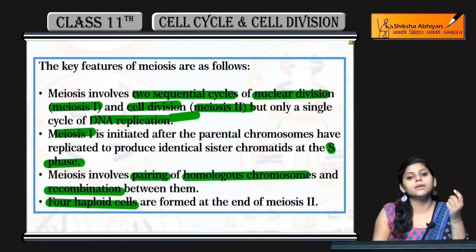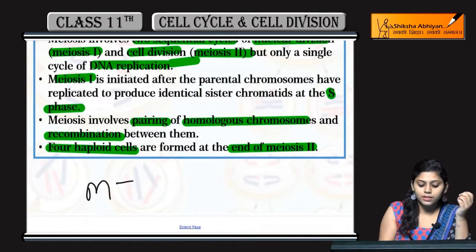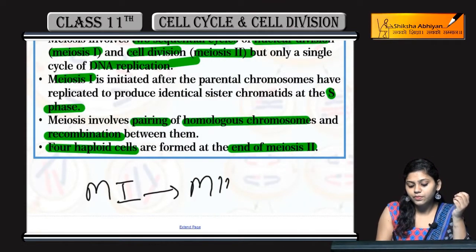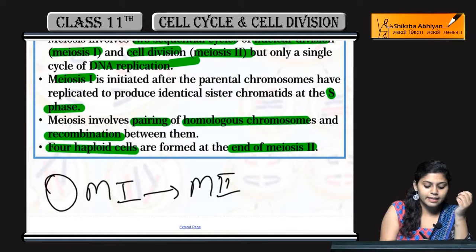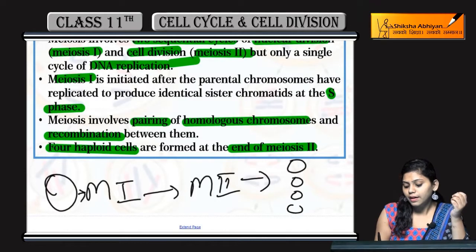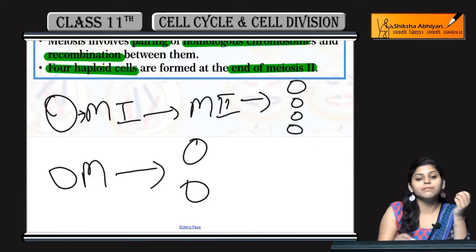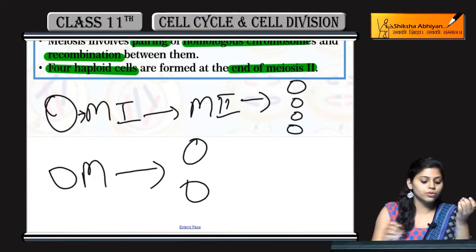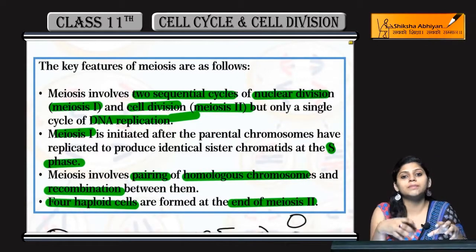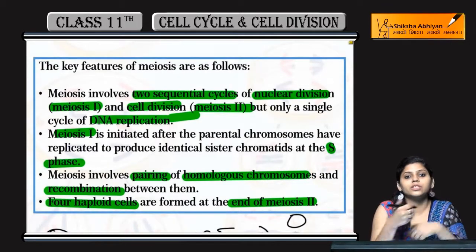Four haploid cells are produced after meiosis two. पहले meiosis one होगी, then meiosis two. तो एक cell से कितनी daughter cells produce होंगी? Four. हमने देखा था mitosis में दो daughter cells produce होती थीं एक cell से, लेकिन meiosis में four daughter cells produced होती हैं. यह हैं कुछ main events meiosis के. अब meiosis one और meiosis two के phases में क्या होता है, यह हम detail में study करेंगे.